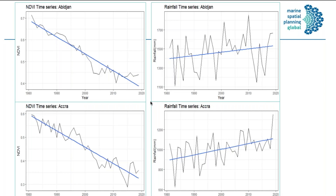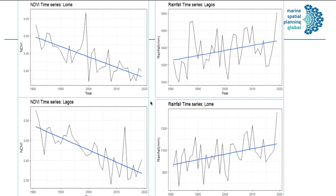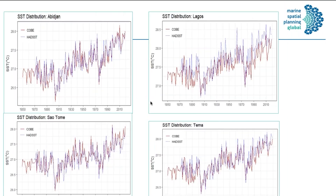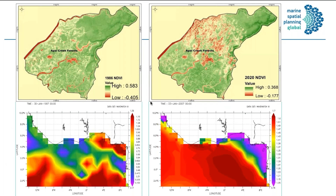I can't put all the analysis I've done so far here. We also have storm surges and many other issues. This slide shows the SST — looking at the historical information about the sea surface temperature over the Gulf of Guinea.